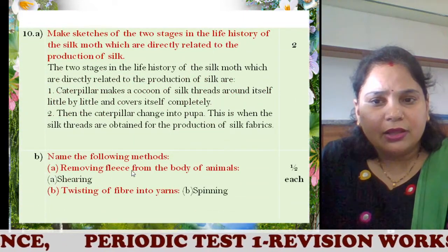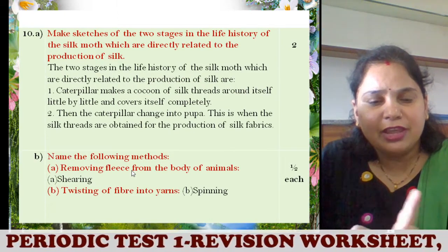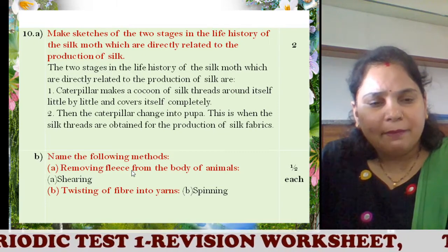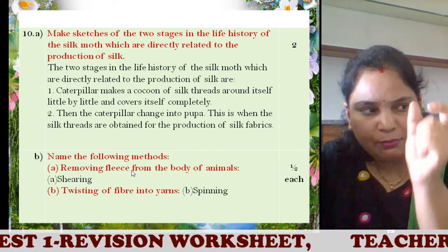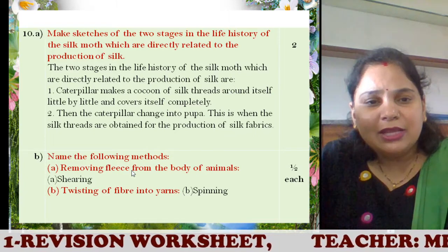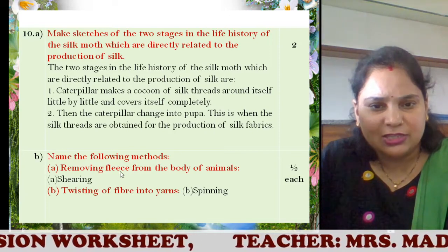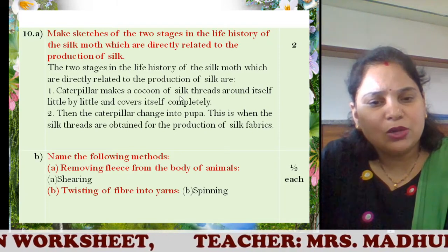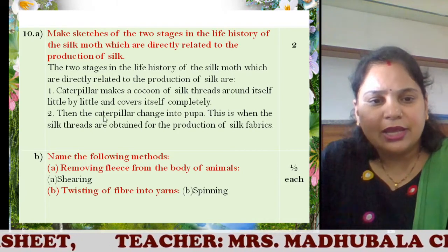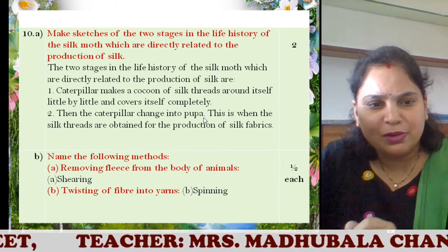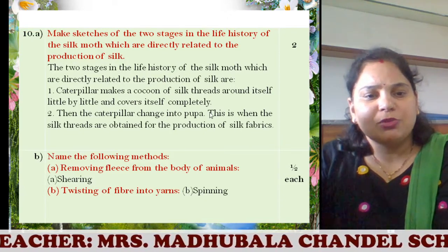Next is the 10A question, which has a part A and a part B. Part A has two marks: make sketches of the two stages in the life history of the silk moth which are directly related to the production of silk. The two stages are: first, the caterpillar makes a cocoon of silk threads around itself little by little and covers itself completely — one mark. Then, the caterpillar changes into a pupa — this is the pupa stage, when silk threads are obtained for the production of silk fibres. Both two stages give you two marks.